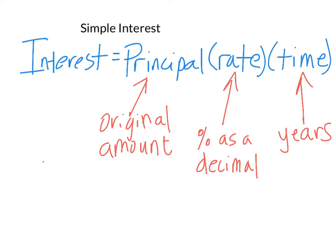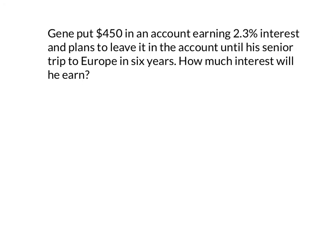So let's go ahead and try. Gene put $450 in an account earning 2.3% interest and plans to leave it in the account until his senior trip to Europe in six years. How much interest will he earn? So we're going straight for the interest.